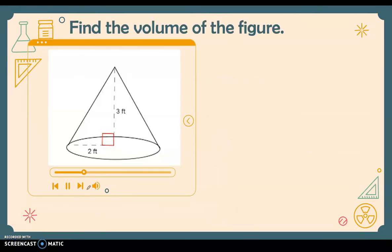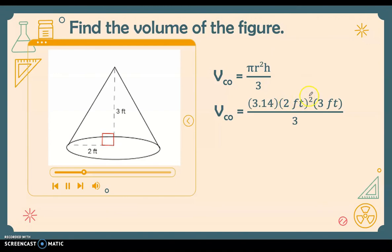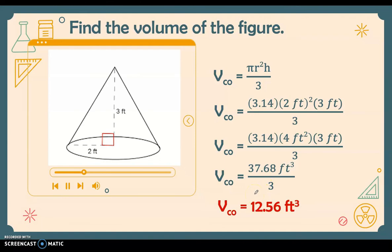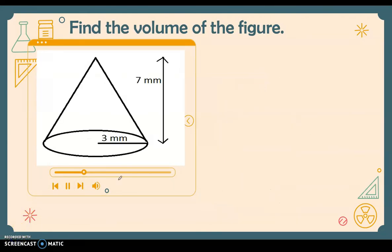Now let's look at cone examples. Find the volume of a cone with height 3 feet and radius 2 feet. The cone's volume is one third of the cylinder's, so the formula is pi r squared h divided by 3. Substituting: 3.14 times 4 square feet times 3 feet equals 37.68 cubic feet. Dividing by 3, the volume of the cone is 12.56 cubic feet.